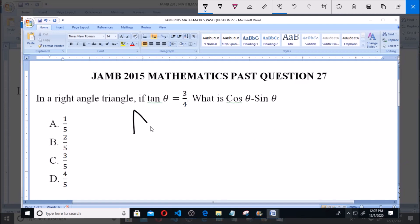In a right angle triangle, tan θ is opposite over adjacent. Since tan θ = 3/4, the opposite side is 3 and the adjacent side is 4.